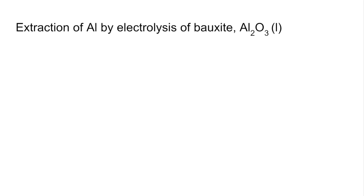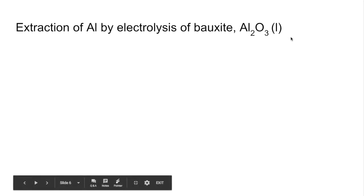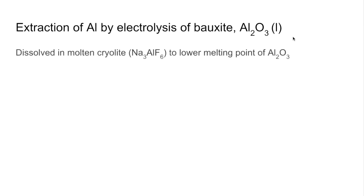Now let's look at another example: the extraction of aluminium by electrolysis of bauxite, the main ore of aluminium, which has the formula Al2O3. We're going to electrolyse molten aluminium oxide. It's dissolved in a substance called cryolite and then melted, which brings the melting point of the aluminium oxide down. Note that cryolite still contains the aluminium ion. The ions we're dealing with are the Al3+ ion and the O2 minus oxide ion.